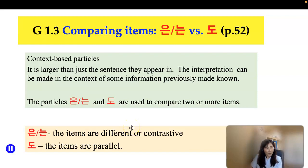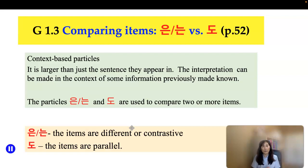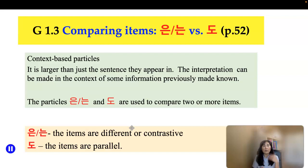Take a look at textbook page 52. I'm going to talk about grammar 1.3, comparing the particle 은/는 versus particle 도. We've been introduced to particle 은/는, the topic particle. Now I'm going to talk about another function of particle 은/는 and introduce the new particle 도. Today we are going to focus on the context-based particle — its interpretation is made in the context of previously known information, so you have to refer to previous context when using these particles.